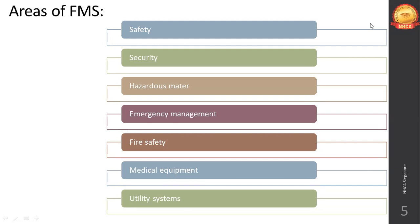Medical equipment should be selected, maintained, and used in a manner that reduces risk, including proper sterilization, disinfection, and cleaning. Utility systems — electricity, water supply, washrooms, toilets, flooring, railings, seating areas, public spaces, and telephone communication — must all be maintained to minimize risk of operating failures.